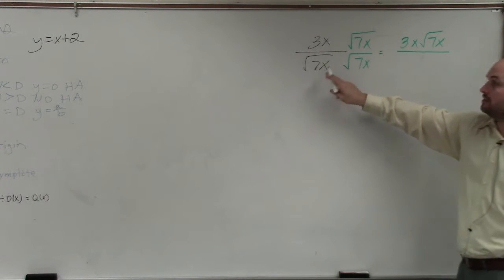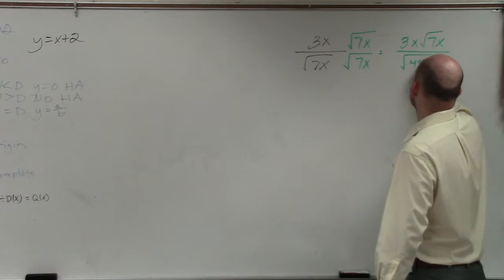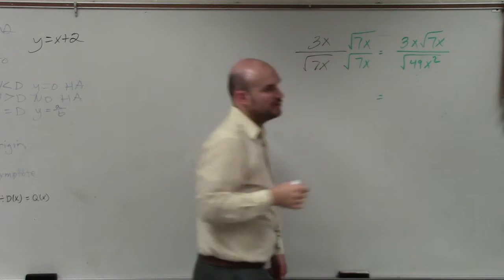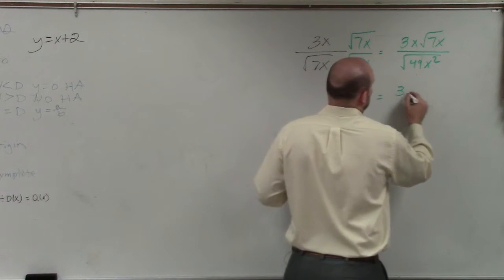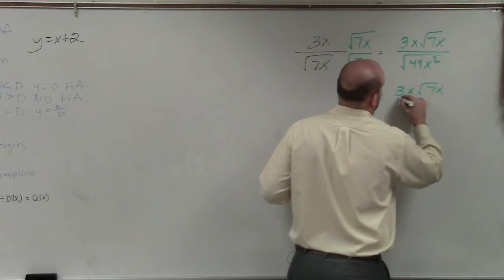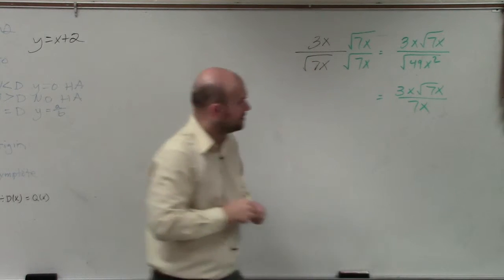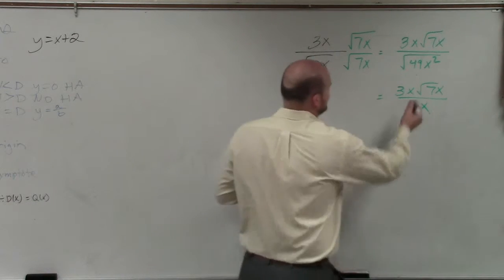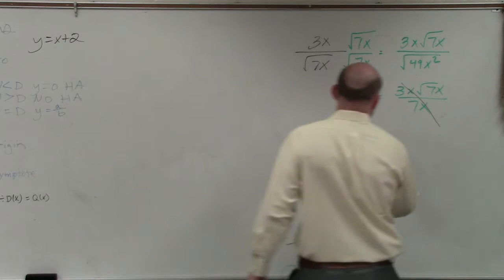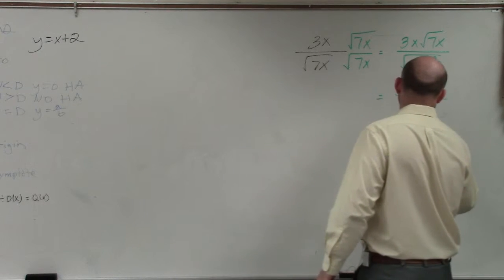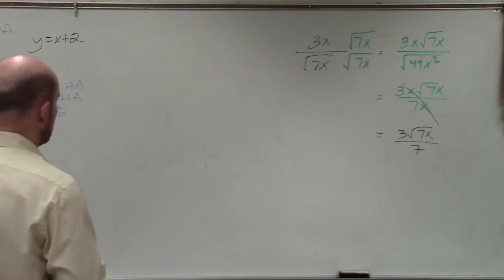All over here, I can multiply these together, so that becomes the square root of 49x squared. We know that the square root of 49 is just 7, and the square root of x squared is just x. So my simplified answer in the denominator would be 7x. Then we see that our variables divide out, so I'm left with a final simplified answer of 3 times the square root of 7x divided by 7.